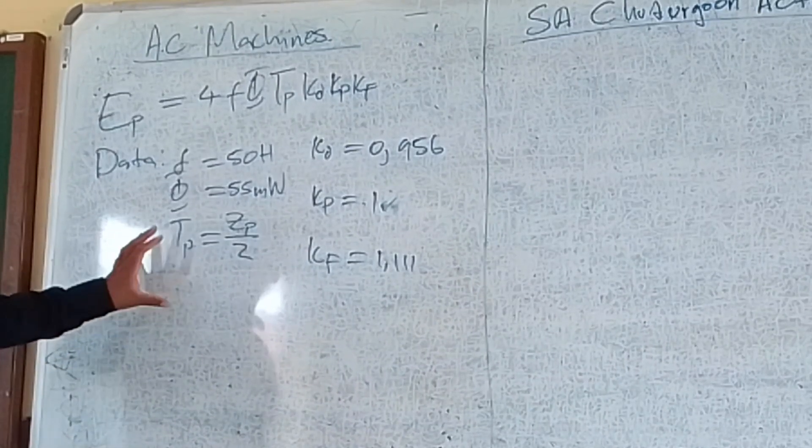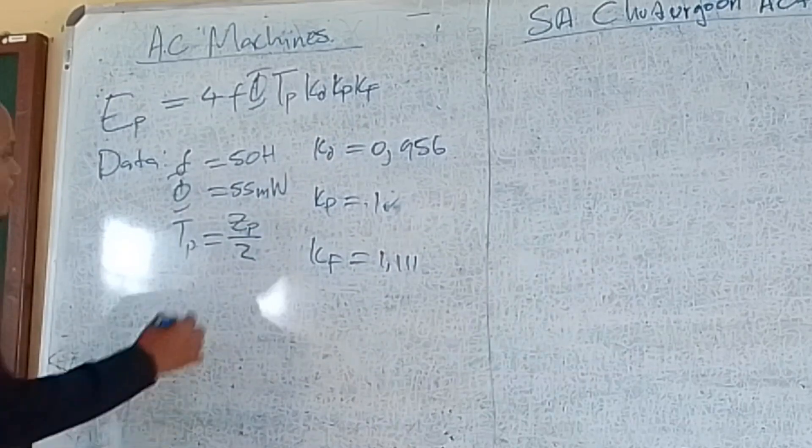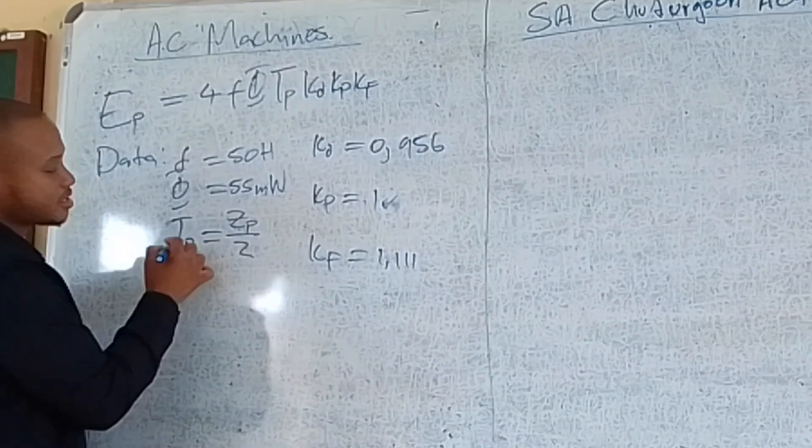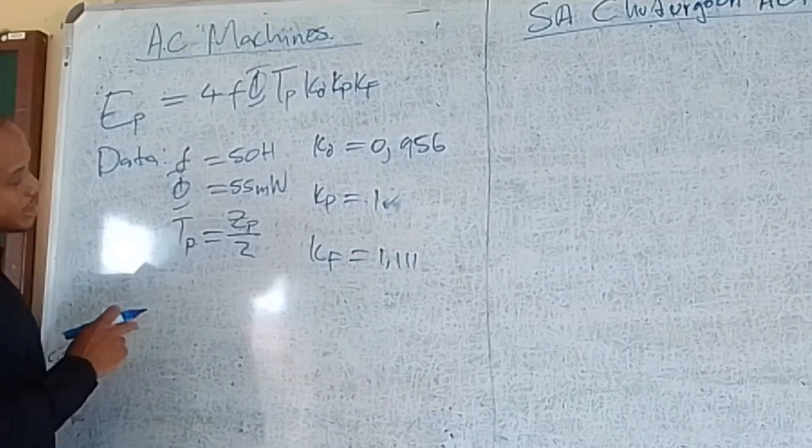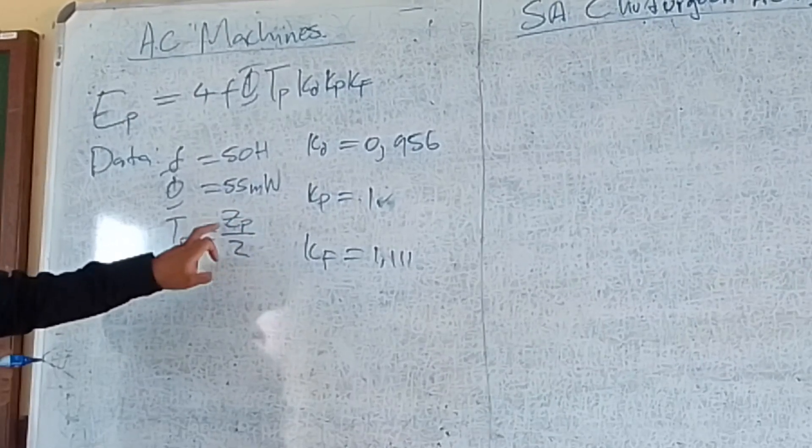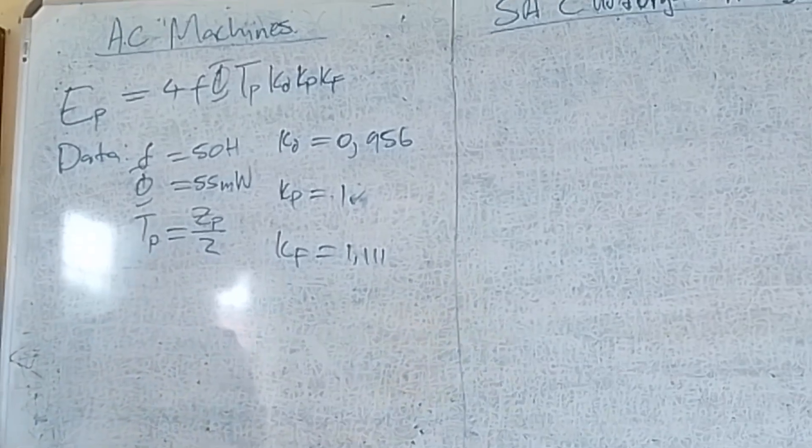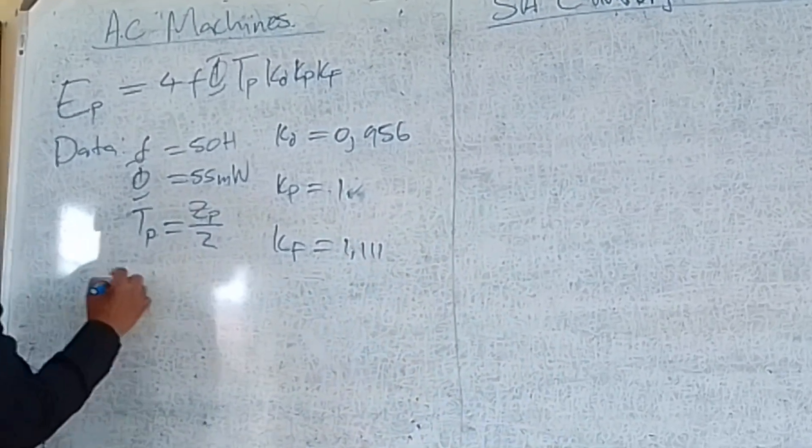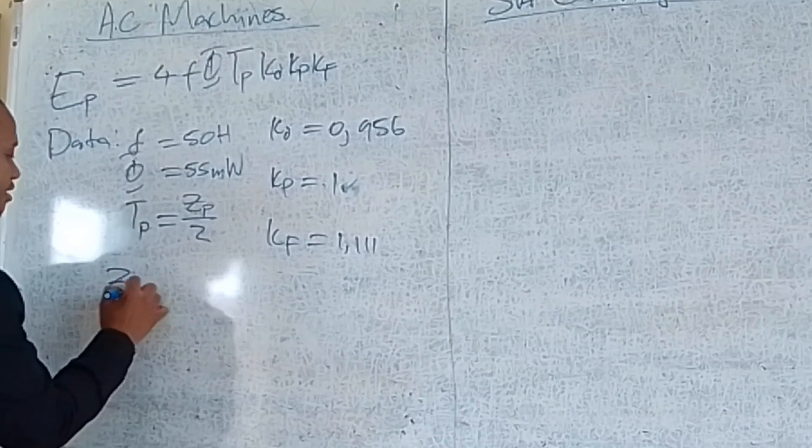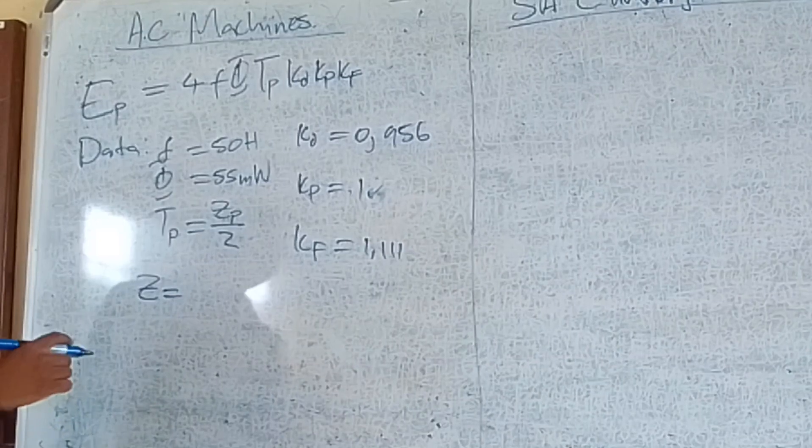We have all the other values except for one. I must calculate the turns per phase. From the equation, the turns per phase is equal to the total number of conductors in the phase divided by 2. I must calculate Z, which is the number of conductors in the machine.